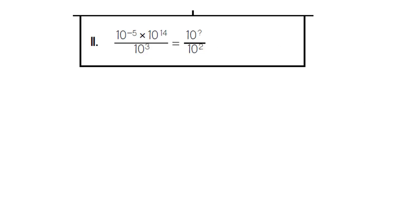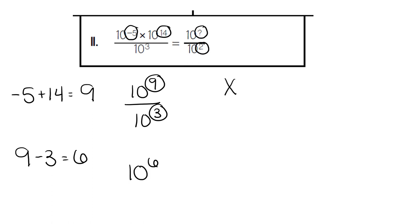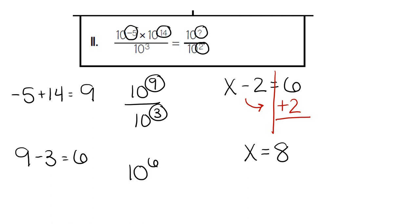For the last problem, it has multiple pieces. We start with the top section, which is being multiplied, so we add the exponents: negative 5 plus 14, which gives us 9. Our new problem is 10 to the 9th divided by 10 to the 3rd. Now solving the division problem, we subtract the exponents: 9 minus 3 gives us a final answer of 6 — 10 to the 6th power. On the other side, it is also a division problem, so we subtract our missing exponent minus 2 and need the answer to equal 6. We do the opposite — plus 2 instead of minus 2 — and 6 plus 2 gives us 8. The missing exponent is 8, represented by the letter C at the bottom.